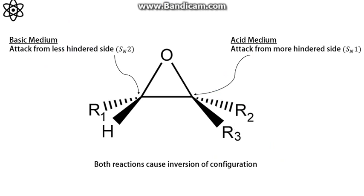In a nutshell, I can say that in basic medium, attack happens from the less hindered side. That is SN2 type. And in acid medium, attack happens from the more hindered side. In both the cases, inversion occurs.